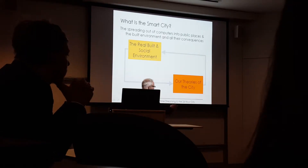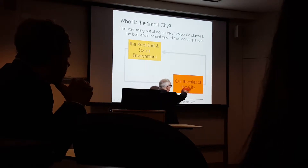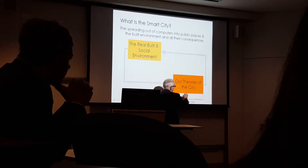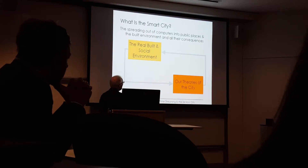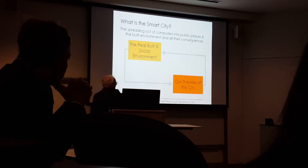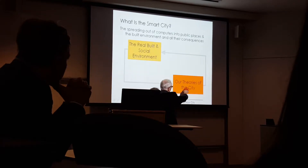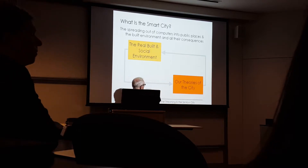This orange box over here is what we've always done in terms of cities — whether or not you're a political economist, a Marxist, a housing theorist, an urban economist, or a land use transportation modeler, we're sitting in this box. This is our view of the city. Out there in that yellowish box, the lustre-coloured box, is the real built-in social environment. It's the real city. And to some extent, our process of refining theories is to collect data on the city — this is data collection.